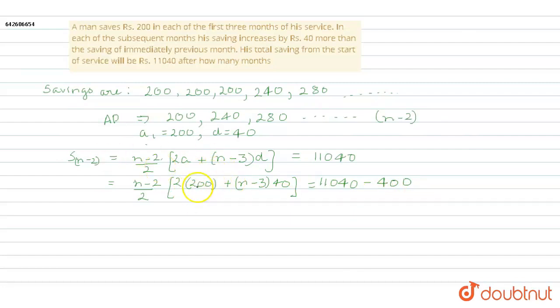Now we'll simplify it and find the value of n. So it will come as (n-2)/2 [400 + 40n - 120] equals 10,640.